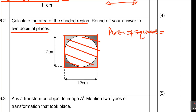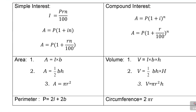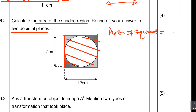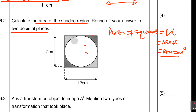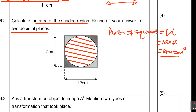The formula sheet didn't give us the area of the square, but you should know: area of a square = length × length = 12 × 12 = 144 cm². That is the area of everything. Now I need to find the area of only the circle inside, so I can subtract it.